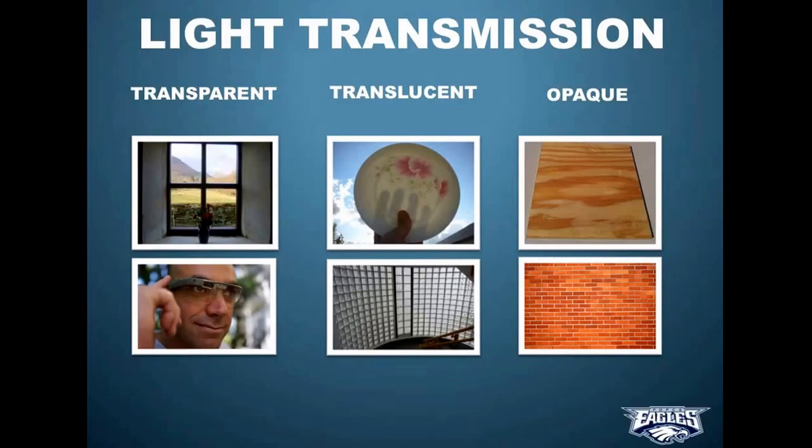Translucent materials block some of the light. Anywhere between like 1% of the light all the way up to 99% of the light would be technically classified as a translucent material. That's kind of nice because sometimes you want a room that's translucent. You want to see light. A lot of light to come in. But you don't want to actually see what's on the other side of the glass.